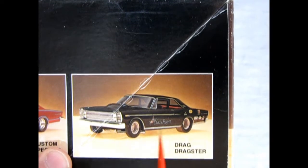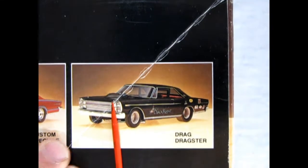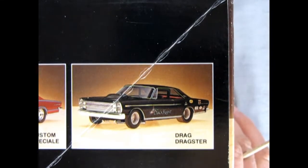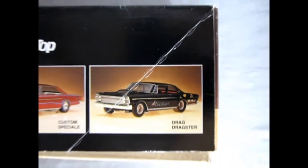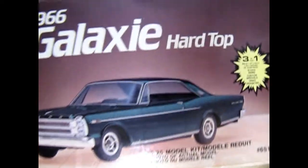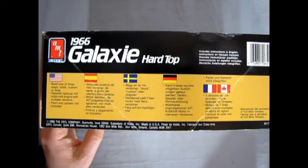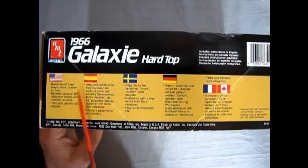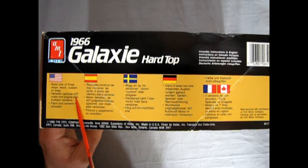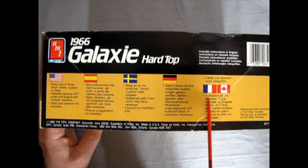Then we get the Dragster version, which is always pretty awesome. It's got the Black Knight horse decal, very cool, as well as the big 427 induction hood, sort of very similar to the Ford Thunderbolt. Over here we get the American English - it says build one of three-way stock custom or drag, detailed optional 427 cubic inch engine with multiple versions. Then you get Spanish, Swedish, German, and French Canadian.